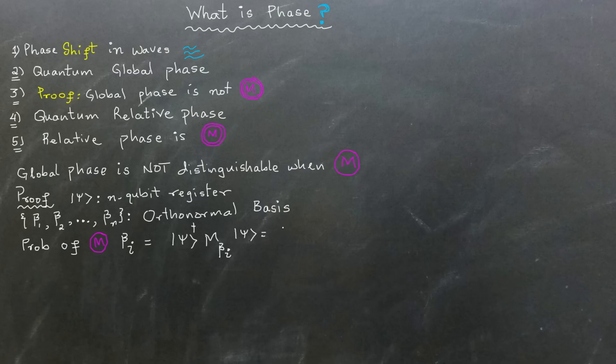This is equivalent to bra psi times M beta i times ket psi, where M beta i is known as the projection operator and is equal to ket beta i times bra beta i. In case you want to know more about the projection operator, I will provide a link to our related video in the description for you.